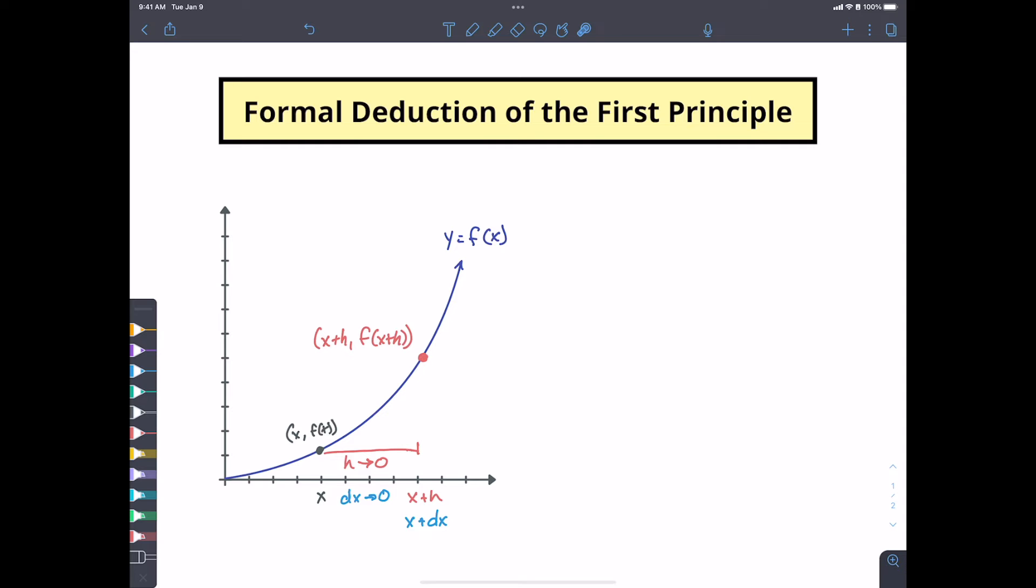So now we've got two points on our function, on our curve. And what we're trying to do is we're trying to get this change in x so small that it's practically zero. So even though here it looks like we've got a large distance between these, we want to assume that this is infinitely small.